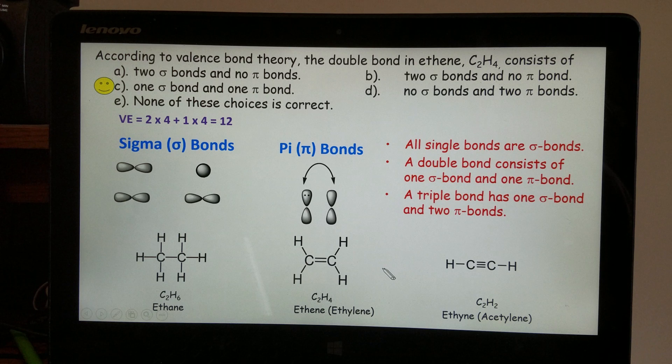We went a little bit beyond what is asked here, but if we go back to this question, it just asks how many sigma, how many pi are in a double bond. Whenever you read the question, read that carefully.